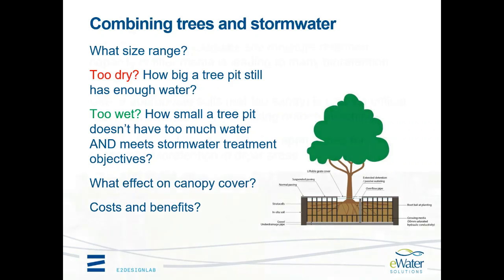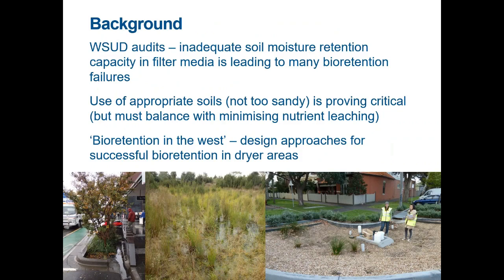To give a bit of background: we've spent time doing audits of bioretention systems in a couple of councils around Melbourne and talking to people interstate. Contrary to popular expectations — we thought we'd find half of them had failed due to clogging — what we're finding is that hardly any are failing due to clogging. Instead, we're finding media that is coarser and holds less soil moisture than even the FAWB specs recommend, and certainly less than what would be desirable to support trees. Up to 70 or 80% of rain gardens in some municipalities are failing because the media is too sandy.